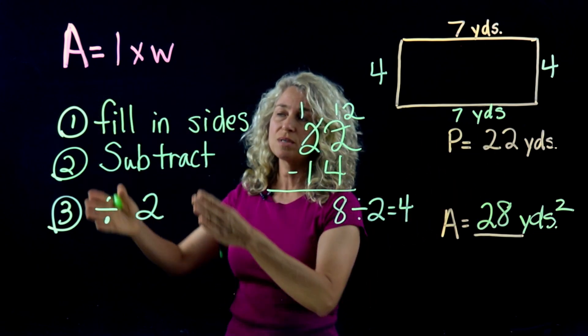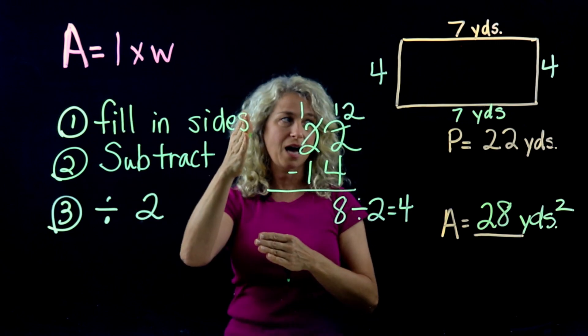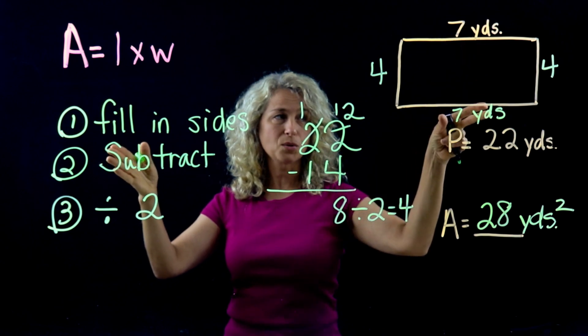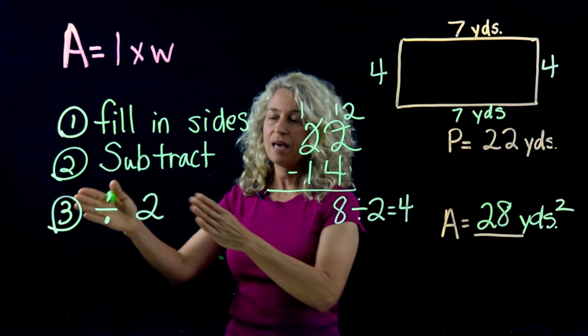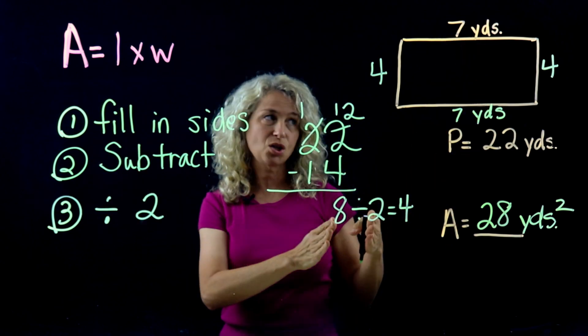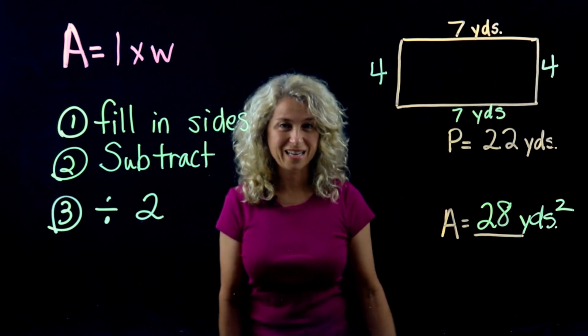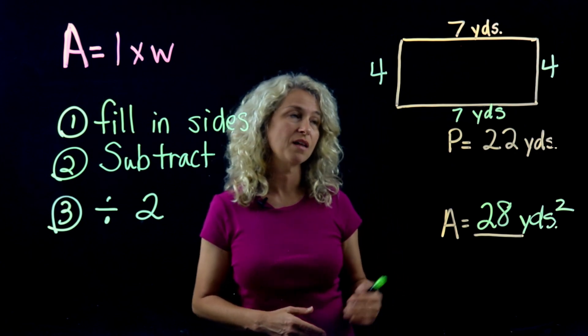All right, so just to recap: how do we find the area when the perimeter is given and you only have one side labeled? You're filling in the sides, step 1. Step 2 is add these two together but subtract from your perimeter.